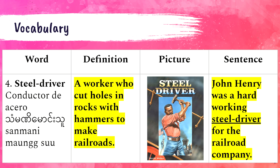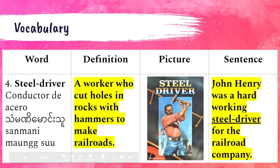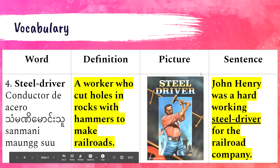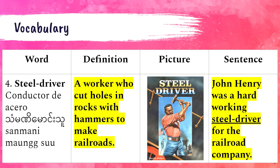We're going to read about a man named John Henry in the next class. John Henry was a hardworking steel driver for the railroad company. Here's a picture of him with his hammer — he's hammering those spikes into the rock.